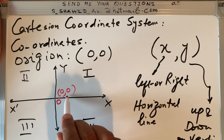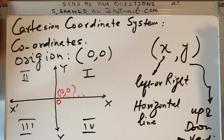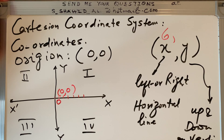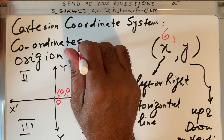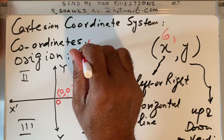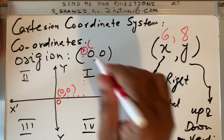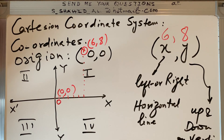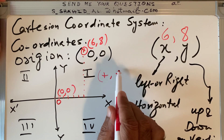For example, if I travel 6 units to the right on the x-axis, and then 8 units up on the y-axis, I locate my point there. That point has coordinate (6, 8). Both x and y are positive, so this point is in the first quadrant, where x is positive and y is positive.